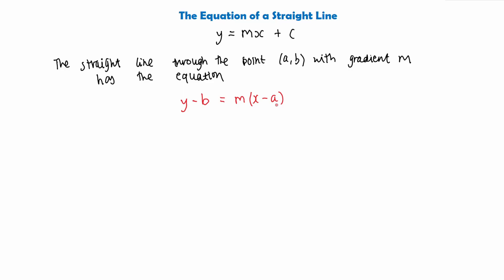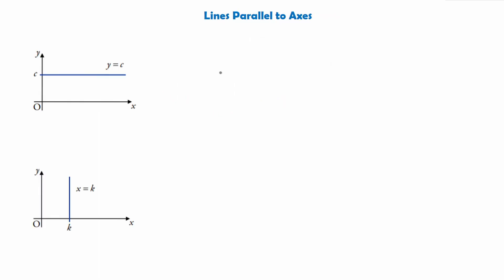Notice if we have a point (0, c), c is the y-axis intercept, and we can use this equation and rearrange it to work out the equation of straight lines. For lines parallel to a particular axis: a horizontal line is parallel to the x-axis and a vertical line is parallel to the y-axis. The gradient of a horizontal line is equal to 0. Substituting into y equals mx plus c, we get the equation y equals c, which is the y-axis intercept.